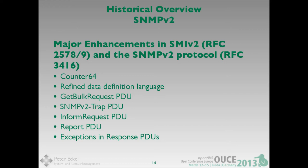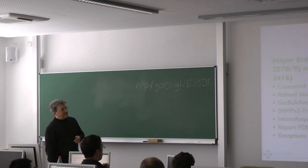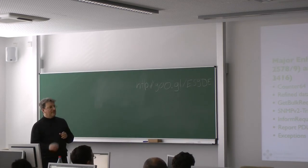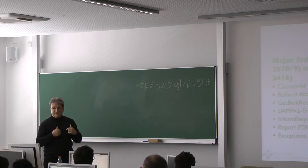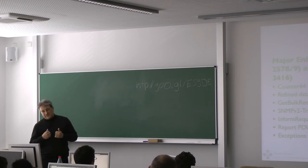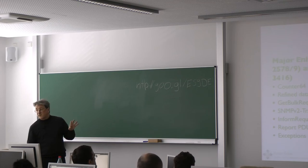The data definition language was refined — I won't go into detail as it would take too long. We got Counter64, which solves the problem of wrapping counters on very fast interfaces. The get-bulk request PDU is very important. SNMPv2 traps are covered. You can also get exceptions in response PDUs — not only the information you asked for, but also an error status, which is important for some applications. All of these changes from SNMPv2 stayed exactly the same with SNMPv3.